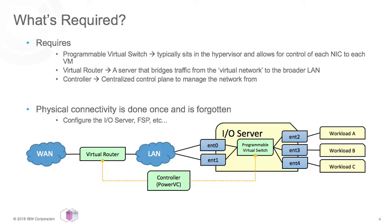In a typical software-defined network, you'll likely see these general requirements: a programmable virtual switch, a virtual router, and then the controller. The programmable virtual switch for PowerVM sits in the NovaLink LPAR. Essentially, this virtual switch is the very first entity that the workload's Ethernet traffic touches, even for inter-partition communication. It all goes through the virtual switch on the NovaLink LPAR.